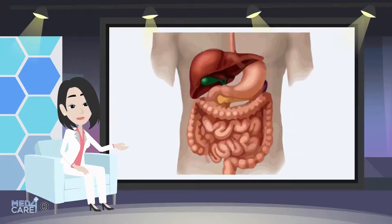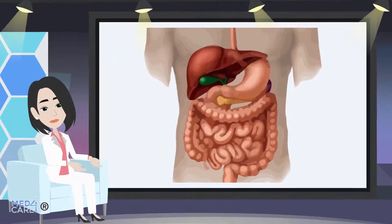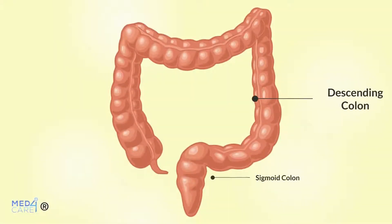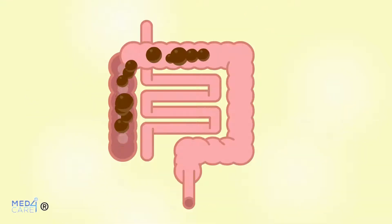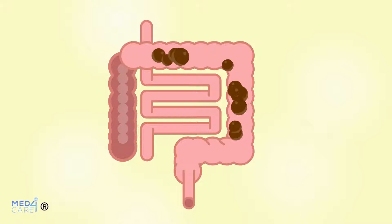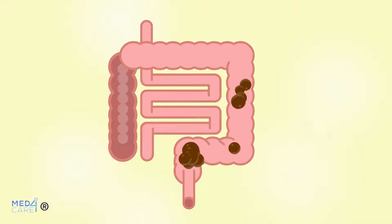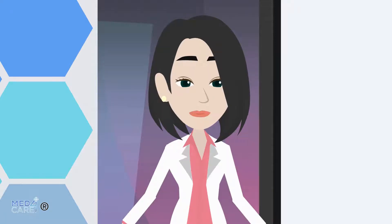Constipation has multiple causes that are often difficult to accurately identify. In particular, the causes are different depending on whether it is primary or secondary constipation. In the first case, the slow motility of intestinal transit is often linked to a functional problem affecting the colon or rectum. In the second case, however, various pathologies may be at the root.